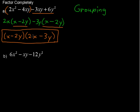That's factoring by grouping. Now we're going to take the next one — 6x squared minus xy minus 12y squared — and turn it into something we can factor by grouping. For something like this with a coefficient other than 1 on the x squared term, a nice method to use is called the AC method. It always works, which is a nice thing.